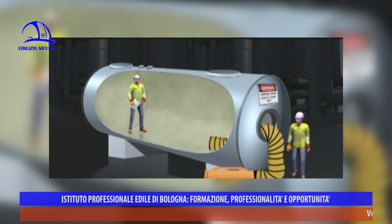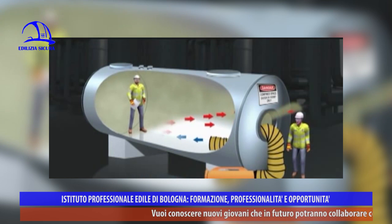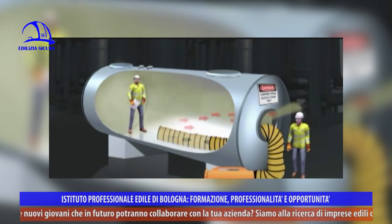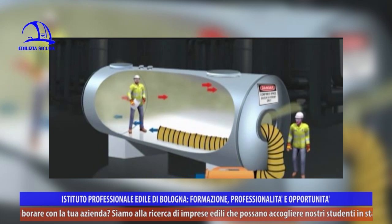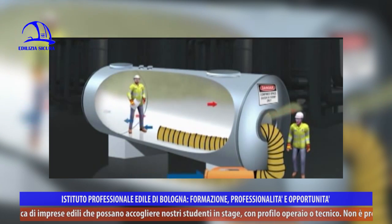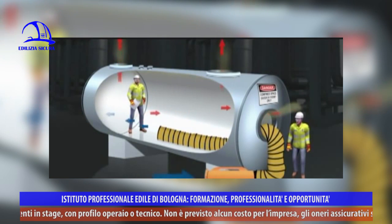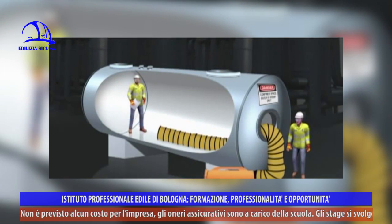Successivamente bisogna indicare con esattezza quali tipologie di lavoro eseguire all'interno dell'ambiente confinato e, soprattutto, scegliere le attrezzature necessarie per il recupero dell'eventuale infortunato. Tutto questo dovrà essere scritto all'interno di questa procedura di emergenza, la quale andrà ad indicare passo a passo le procedure e le modalità operative per una corretta gestione dell'emergenza.